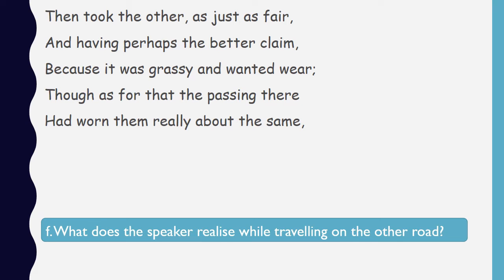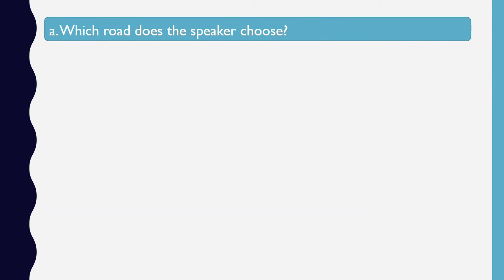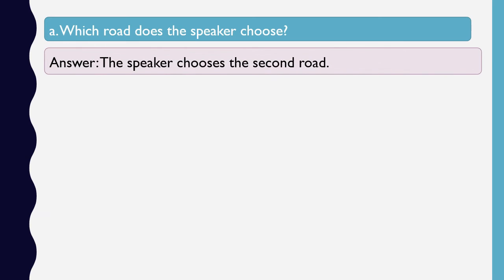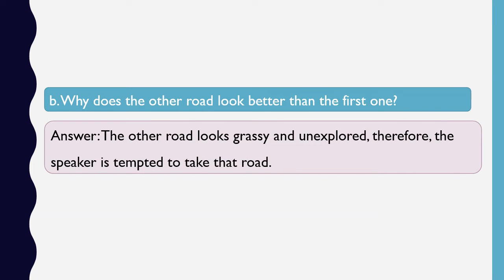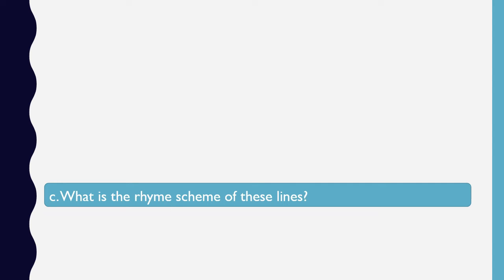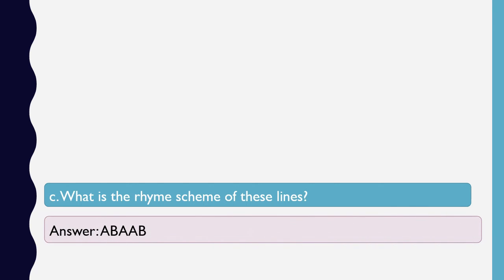Let's see what the answers are. Which road does the speaker choose? The speaker chooses the second road when he says 'I chose the other'. Why does the other road look better — when he says it has the 'better claim'? The other road looks grassy and unexplored; therefore, the speaker is tempted to take that road. What is the rhyme scheme of these lines? We have already discussed this in our video on the analysis of the poem. The answer is A-B-A-A-A-B.